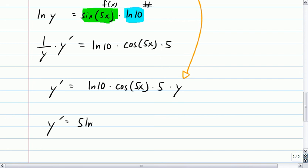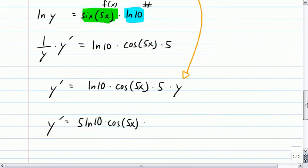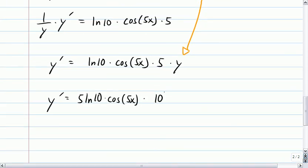y prime equals, and I can rearrange this, 5 natural log of 10 times the cosine of 5x times, let's see, y is 10 to the sine of 5x. 10 to the sine of 5x. And there you go, that's your answer.